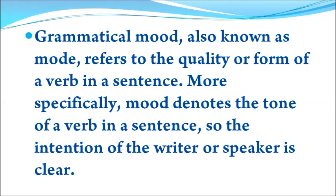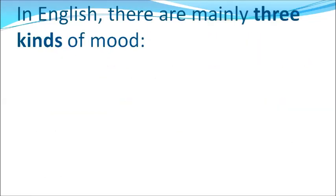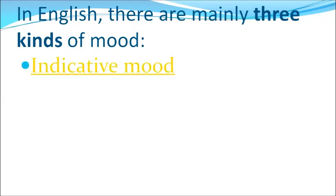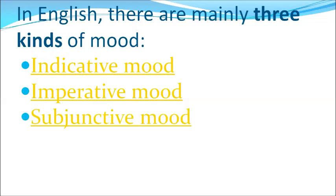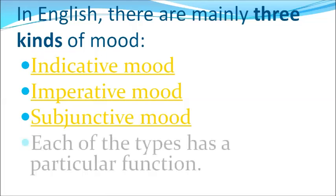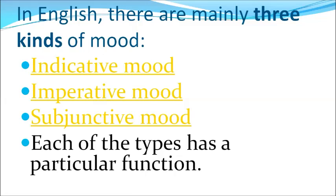In English grammar, moods are basically of three different kinds. The first is indicative mood, the second is imperative mood, and the third is subjunctive mood. Subjunctive mood is something you must learn very keenly, though you also need to learn imperative and indicative mood. Each type has a particular function, and you need to learn the function of each and every mood.